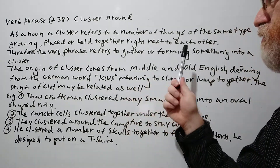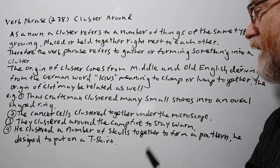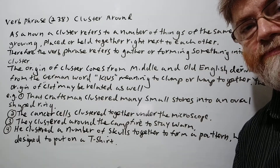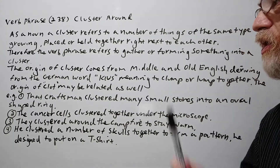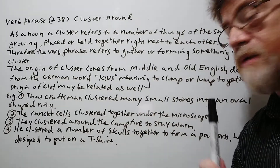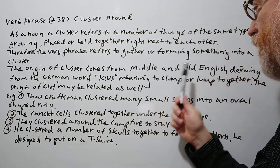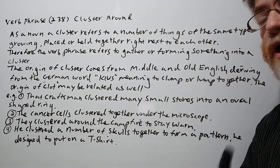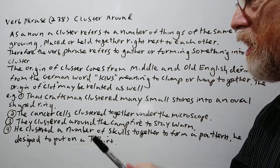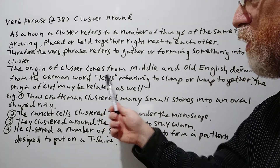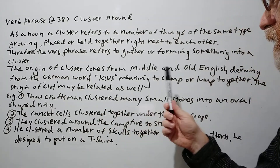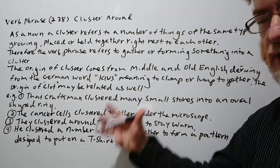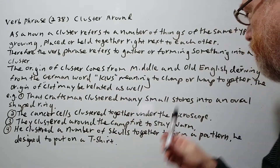Therefore, the verb phrase refers to gathering or forming something into a cluster. The origin of 'cluster' comes from Middle and Old English, deriving from German — the German word 'Klos' meaning to clump or lump together, just kind of put it together in a messy way.